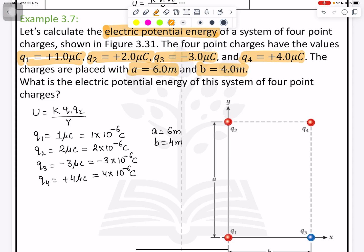The charges are placed at distance A which is given as 6 meters and B is given as 4 meters. All these things are given here. What is the electrical potential energy of the system of four point charges?